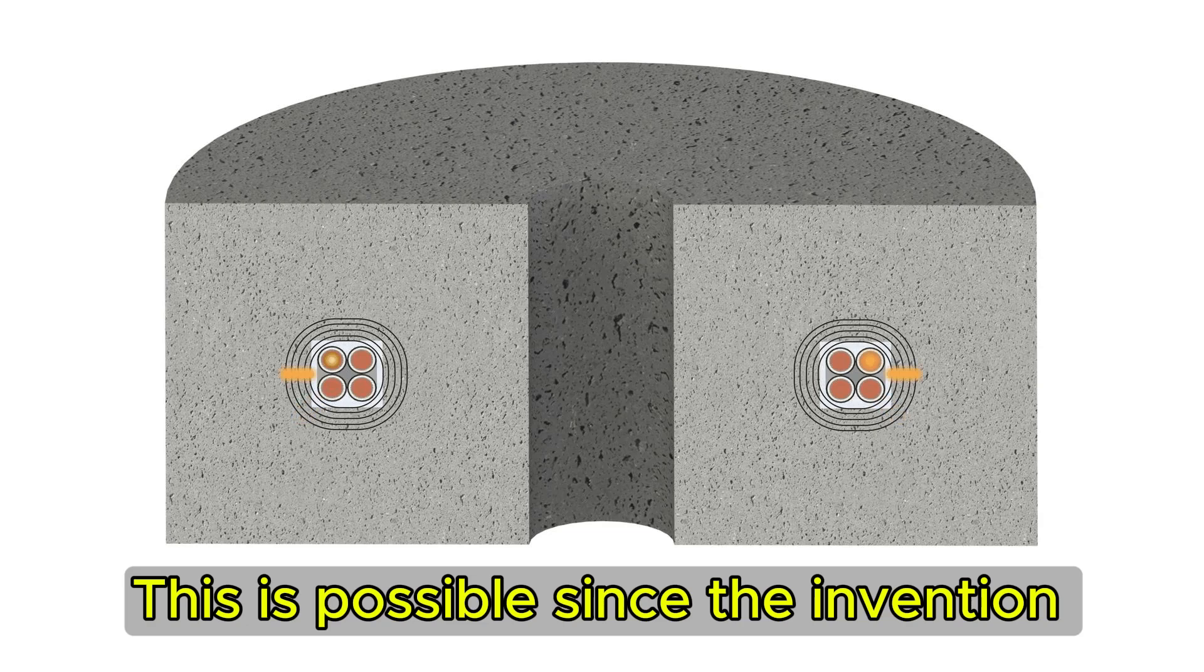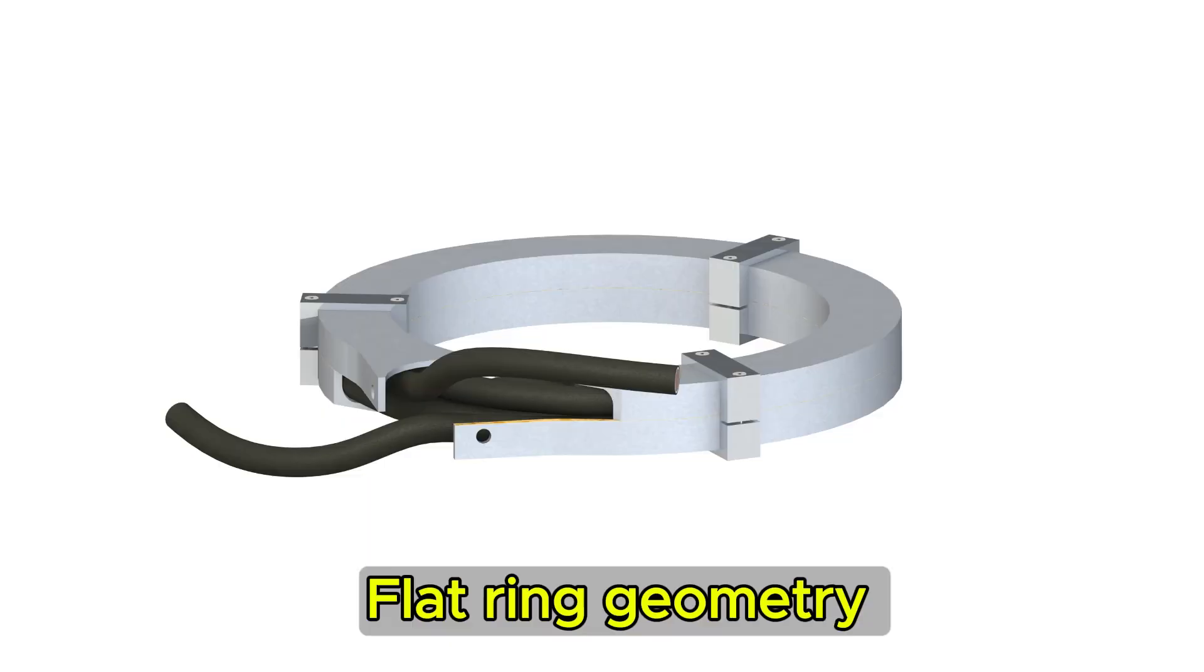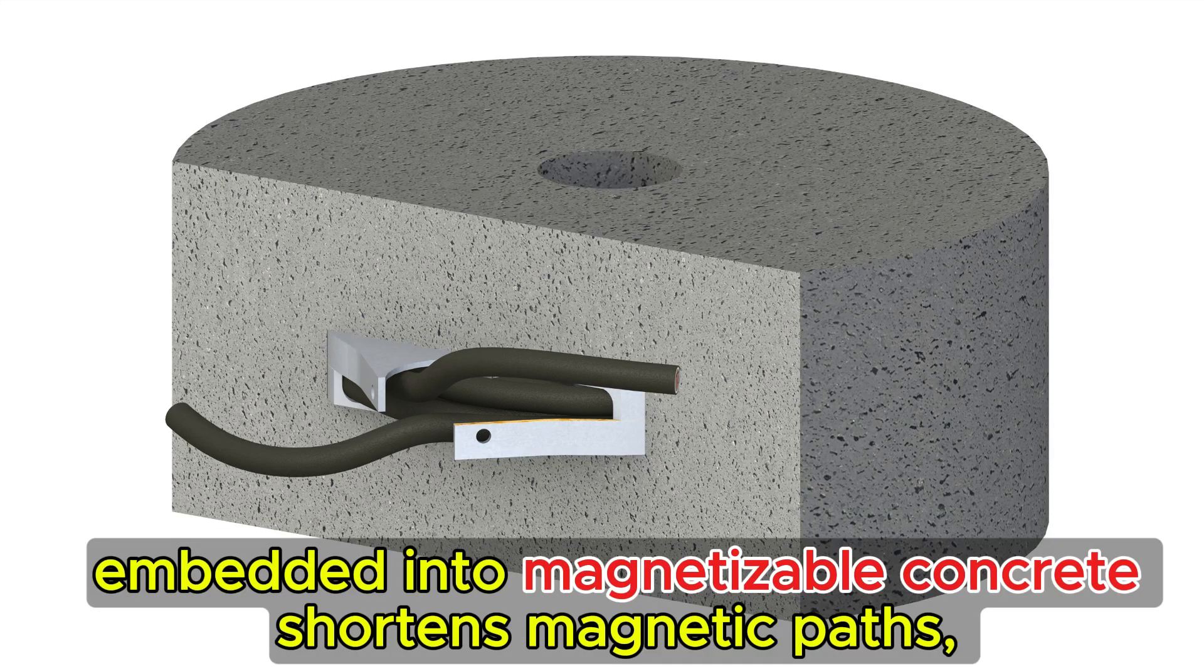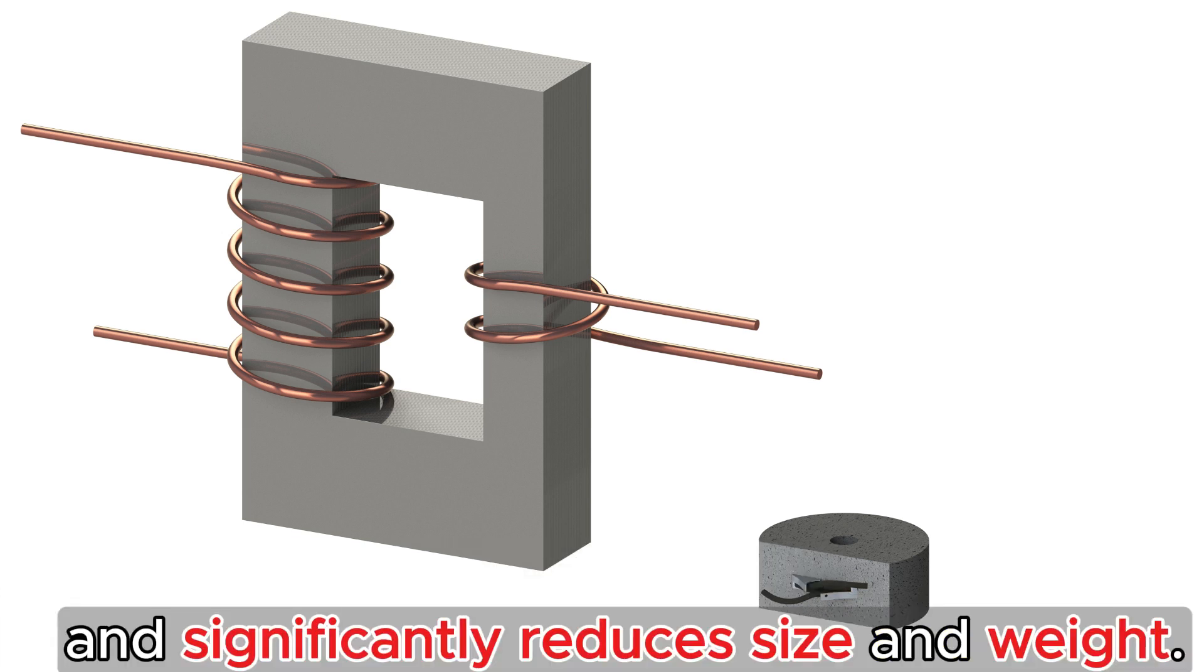This is possible since the invention of flowable magnetizable concrete. Flat-ring geometry embedded into magnetizable concrete shortens magnetic paths, reduces losses, improves thermal dissipation, and significantly reduces size and weight.